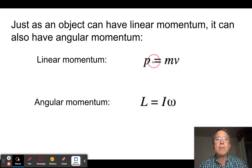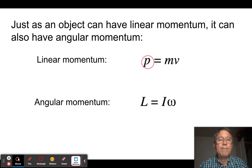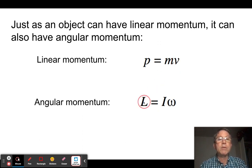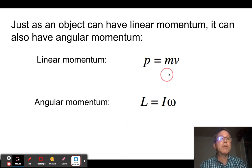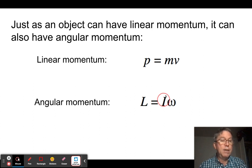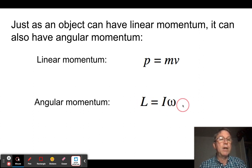Linear momentum is symbolized by P and equals mass times velocity. Angular momentum is symbolized by the letter L and equals the rotational equivalents: rotational inertia I instead of M, and angular velocity omega instead of V. So L = Iω is basically the angular equivalent of p = mv.